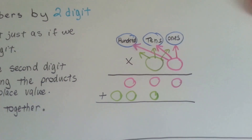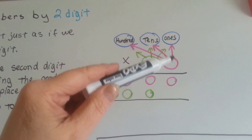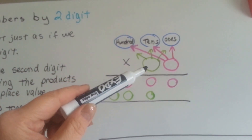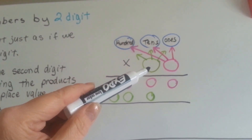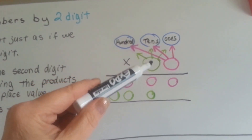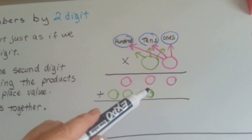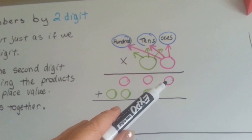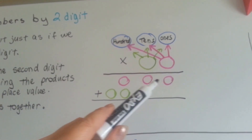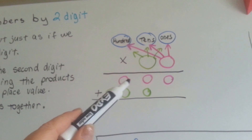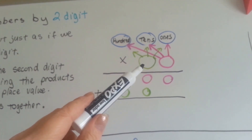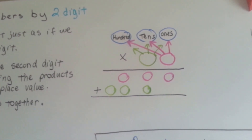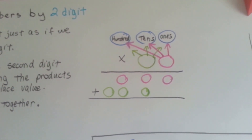We start out just as if we're doing one place value. This one gets multiplied to the ones, the tens, and the hundreds. And then, when it's the second digit's turn, we multiply it to each place value — ones, then tens, then hundreds. But the answers get lined up like this. When we multiply the ones, we start putting the answers in the ones place value — ones, tens, hundreds. But when we multiply the tens, we start putting the answer in the tens place value, because we're multiplying tens.